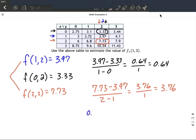So if I go ahead and add together 0.64 plus 3.76, we'll just divide that by 2 to take their average, and we get 2.2.